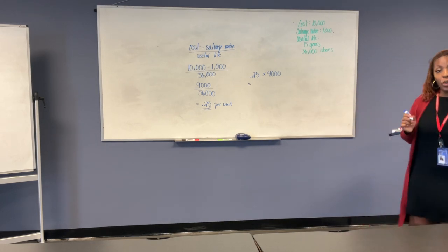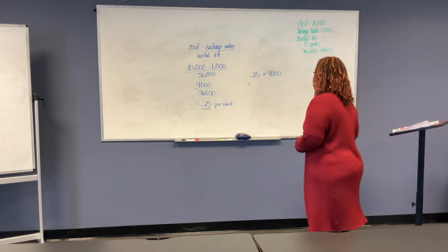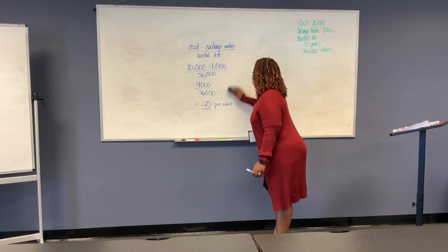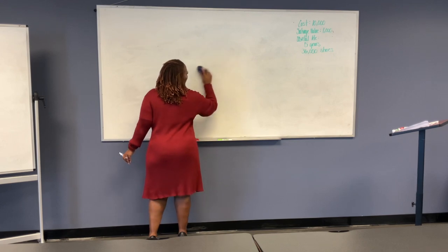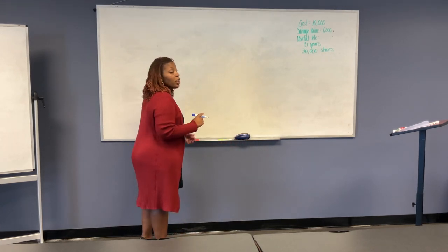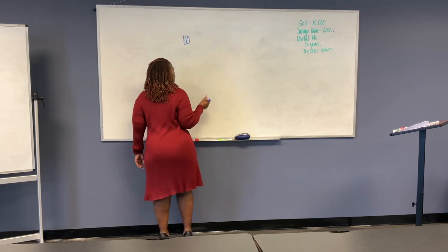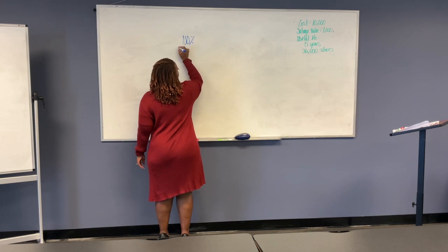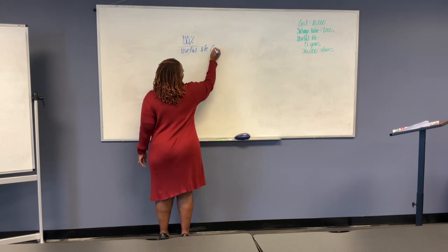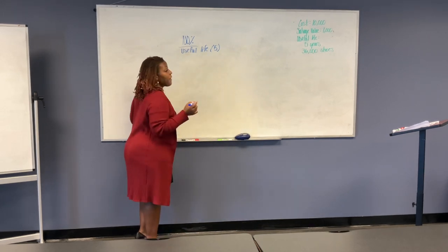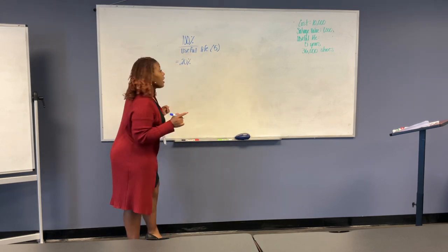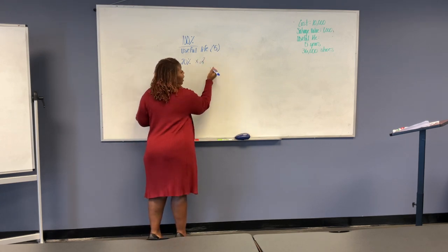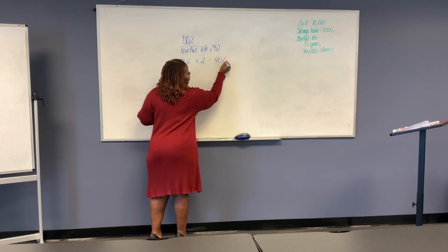Now we will go into the double declining balance. Erasing everything. Because the double declining balance starts off with 100%. So you have your 100%. You divide that by the useful life in years. This case, it's 5. So 100% divided by 5 gives you 20%. Again, we're talking double declining. So you take your 20% and you'll multiply it by 2, which gives us 40%.